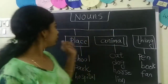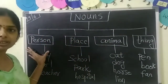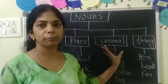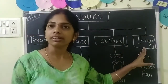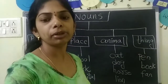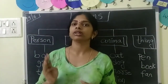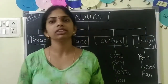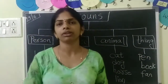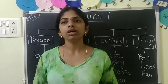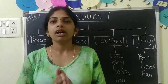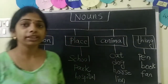So a noun can be a person, place, animal, and thing. So who is a person? Persons means boy, girl, teacher, doctor — anyone. So all those are persons.